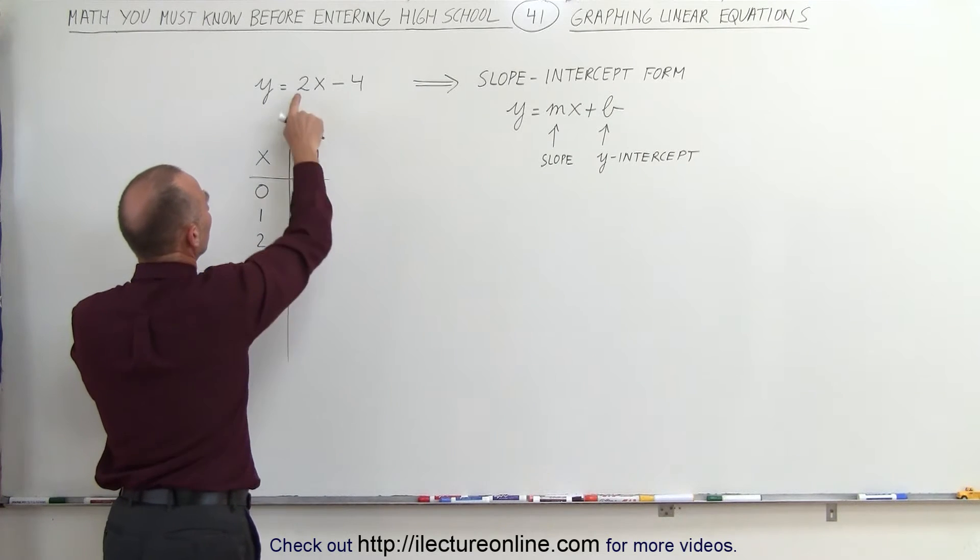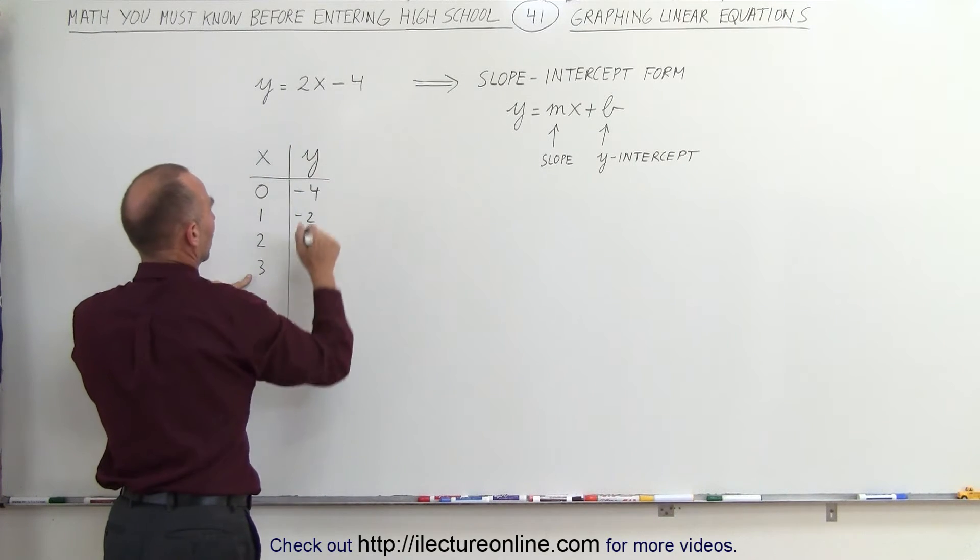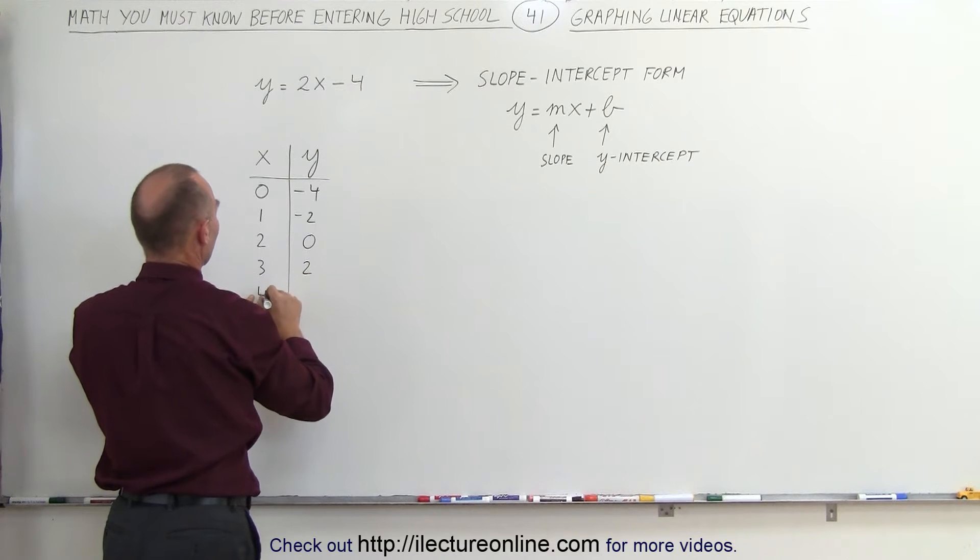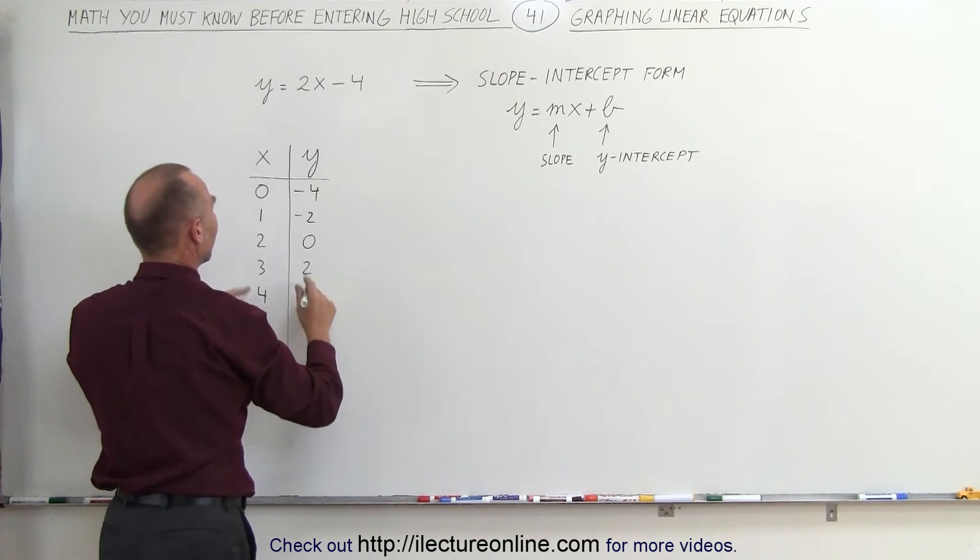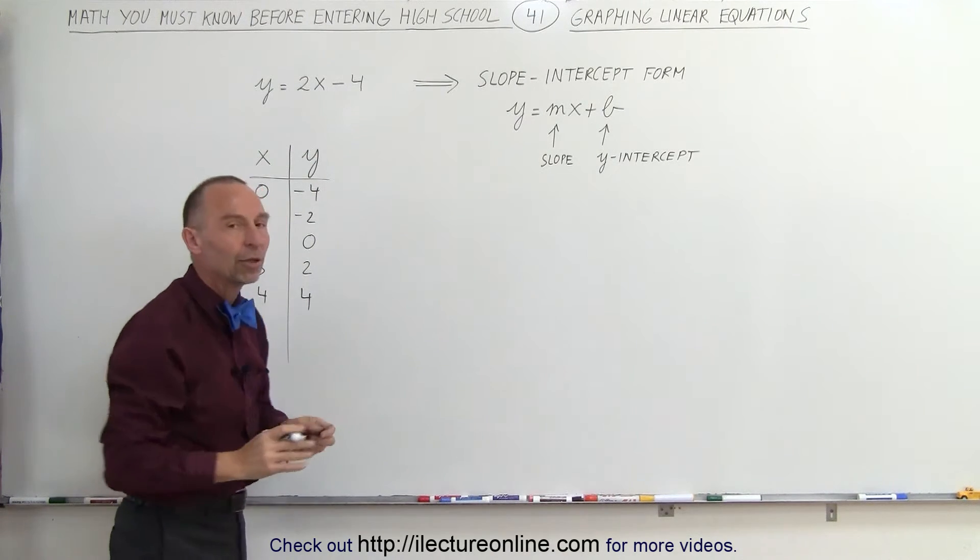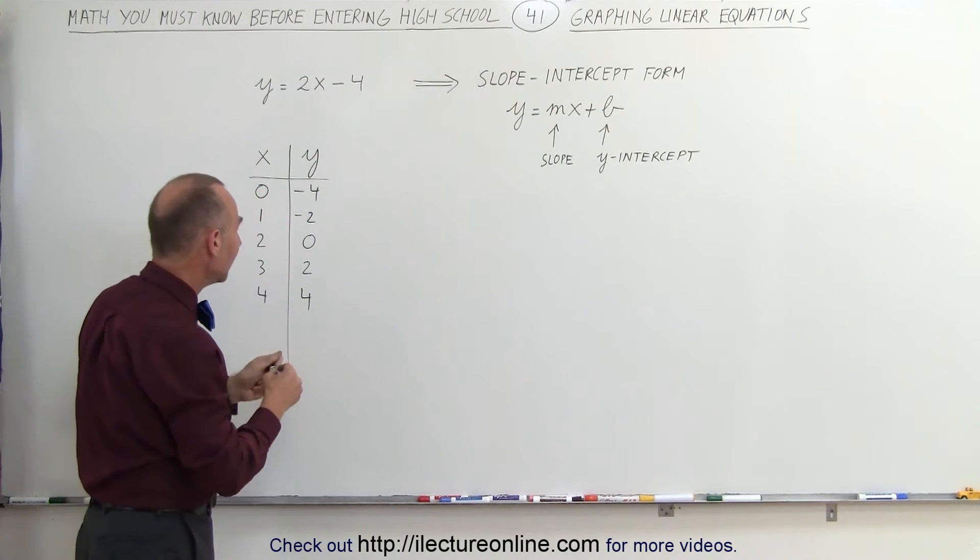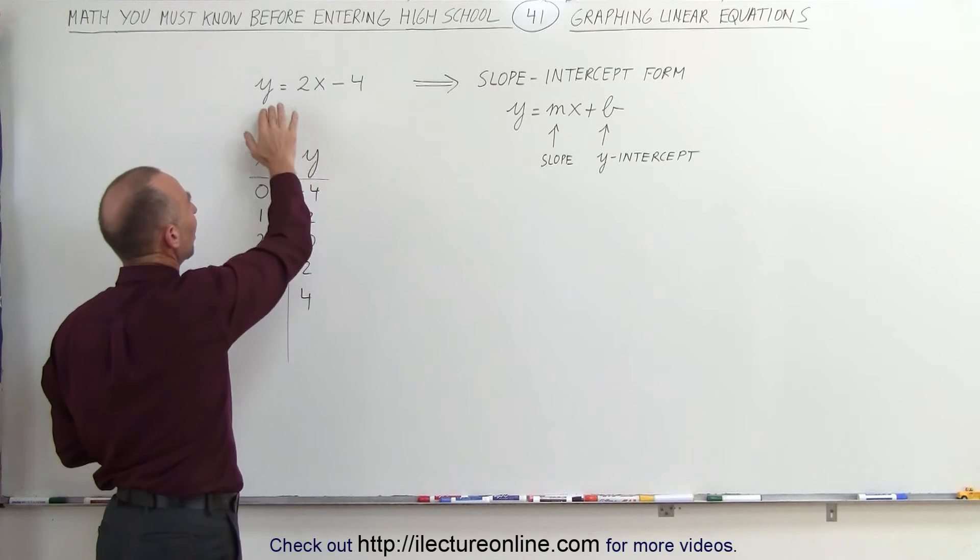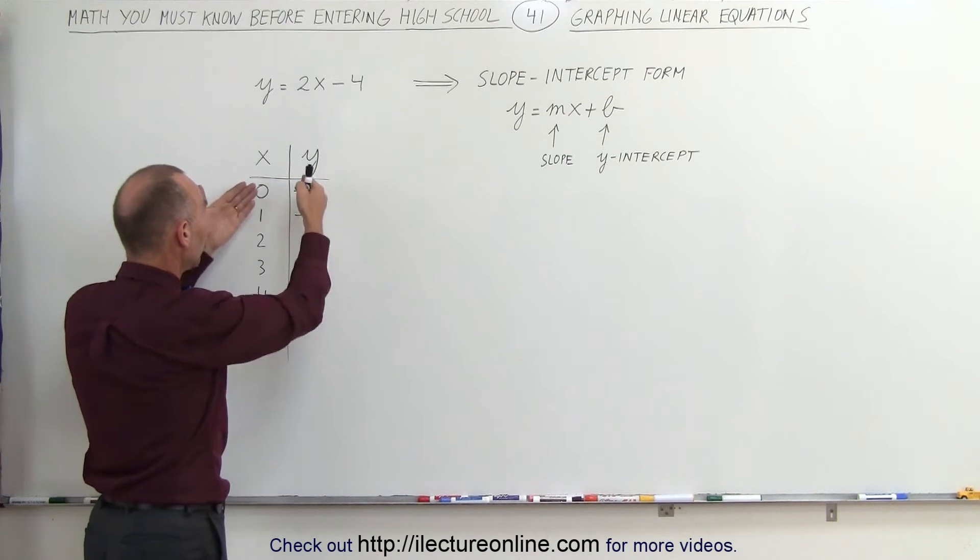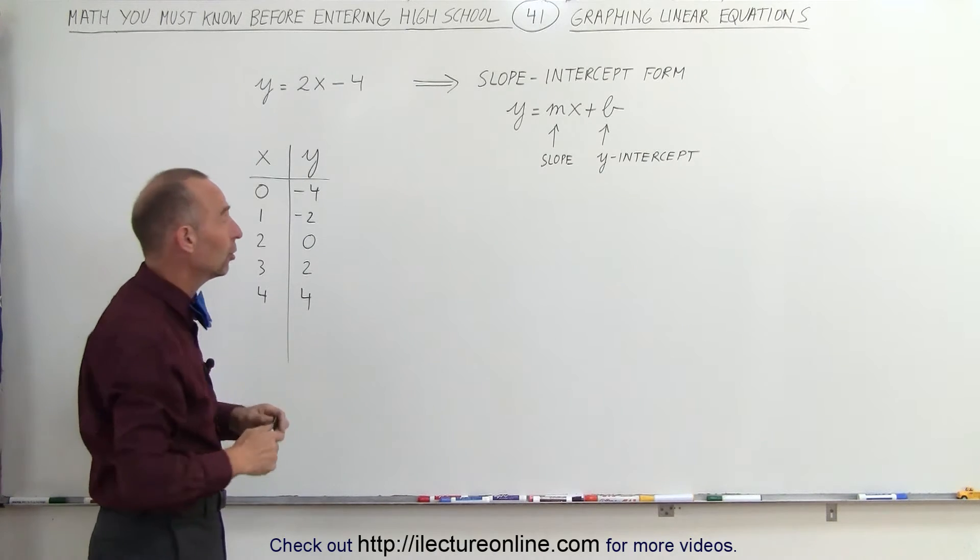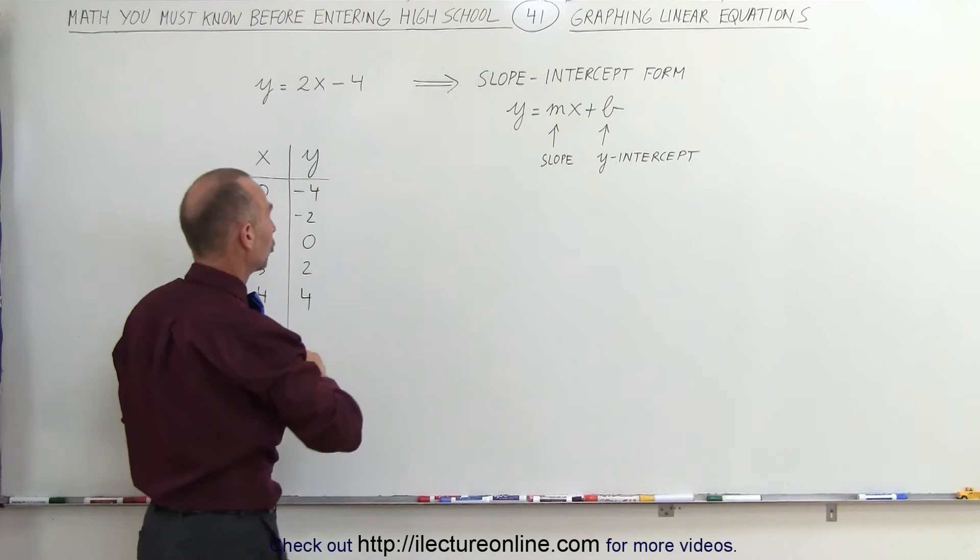When I plug in the value of 3, 2 times 3 is 6 minus 4 gives me 2. When I plug in the value for 4, 2 times 4 is 8 minus 4 which is 4. This is what we call a table of values which explains the ordered pairs that satisfy this equation. We can plug in those ordered pairs on an xy coordinate system and see what the solution looks like.